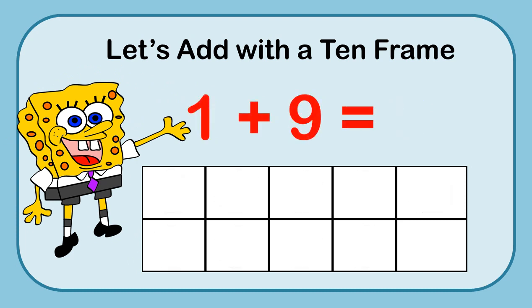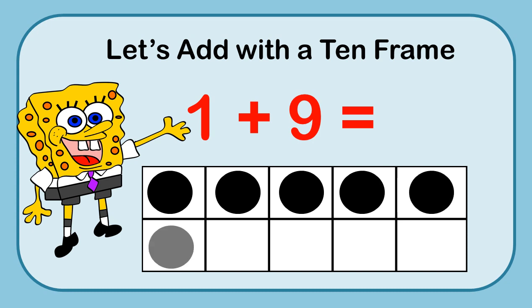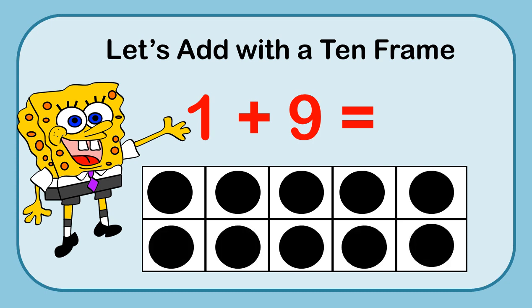Here's another equation: 1 plus 9. My 1 marker and then 9 more: 1, 2, 3, 4, 5, 6, 7, 8, 9. This looks really interesting because my whole 10-frame is filled up! Let's count them all: 1, 2, 3, 4, 5, 6, 7, 8, 9, 10. I can see I have 10 markers — that's why it's called a 10-frame. Or I could say I have 5 and count up: 6, 7, 8, 9, 10. Or I'd just know the whole frame is filled, so I have 10. 1 plus 9 equals 10.